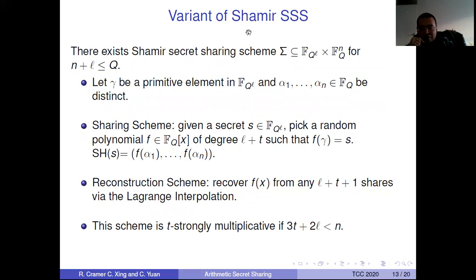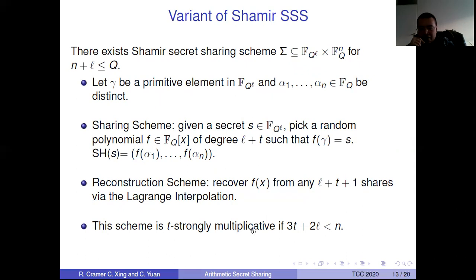The first building block is the variant of the Shamir secret sharing scheme. We have a secret space F_Q^L and share space F_Q. We need gamma, a primitive element in the big field F_{Q^L}, and alpha_1 to alpha_n, which are distinct elements in F_Q. The sharing scheme picks a random polynomial F of degree L plus T such that F(gamma) equals S. The shares are F(alpha_1) to F(alpha_n). The reconstruction uses Lagrange interpolation to recover F(x), from which we recover F(gamma) and thus the secret S. This scheme has distributed multiplicative property when 3T plus 2L is less than N.